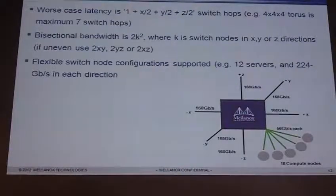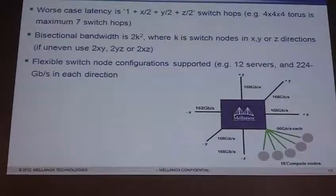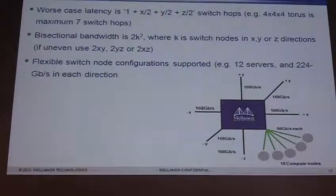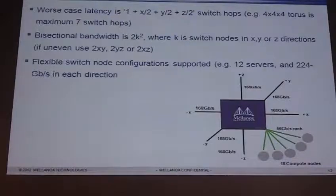Bisectional bandwidth is 2K squared, where K is the number of switch nodes in any of the X, Y, or Z directions. If the dimensions are uneven, you take the worst case of two times X times Y nodes, two times Y times Z, or two times X times Z. The switch node configurations are very flexible. The example I showed earlier used 18 links to servers and then three links in each of the six directions. But you could do 12 servers and have four links in every direction. However you want to mix and match the servers to the bandwidth on your links — it's very flexible. The constraint is that this is a 36-port building block.